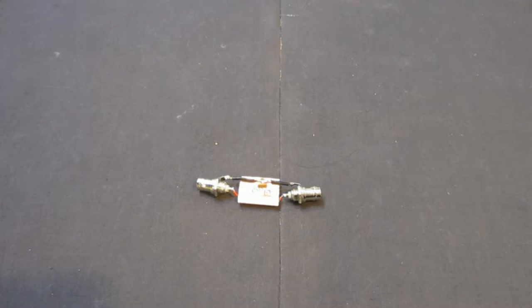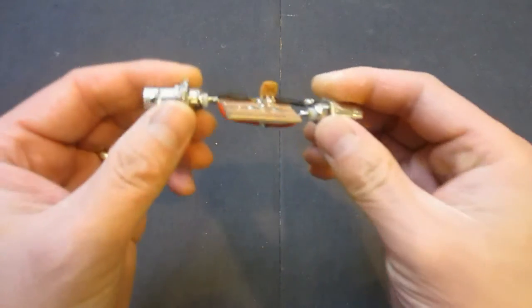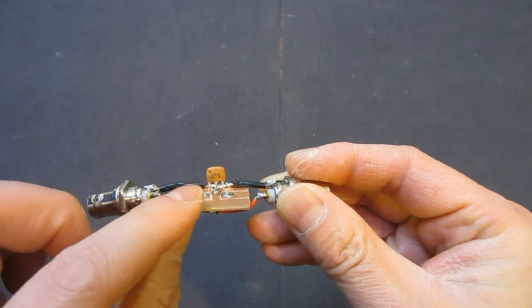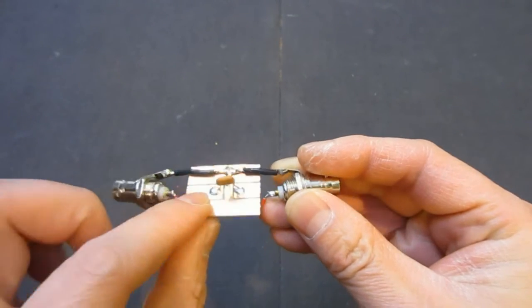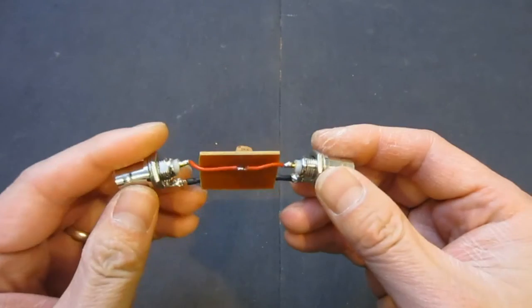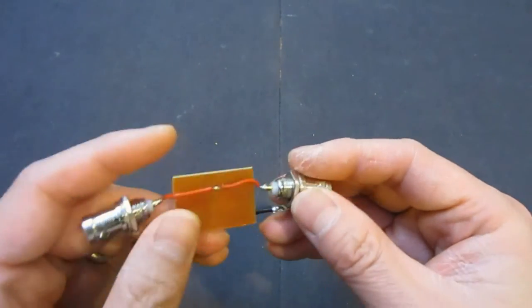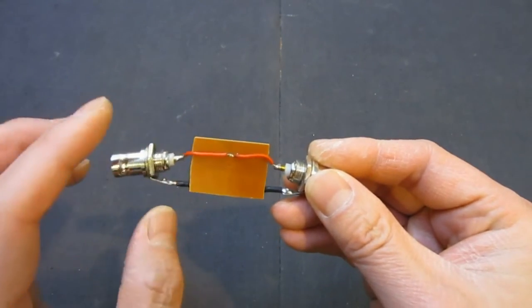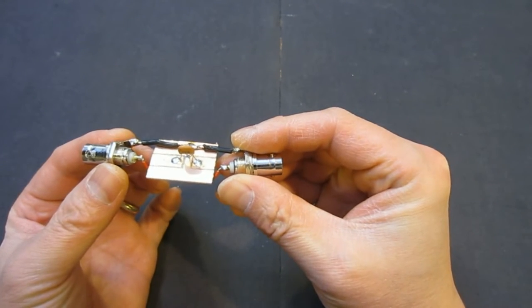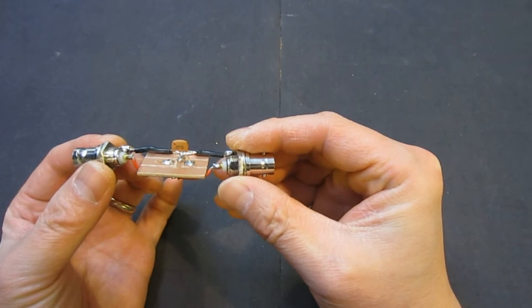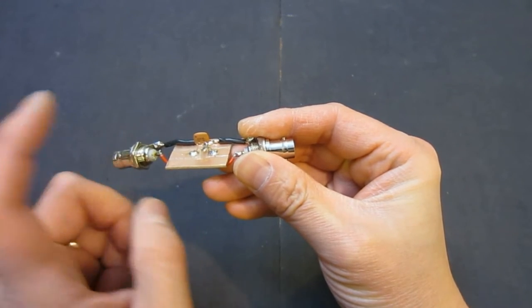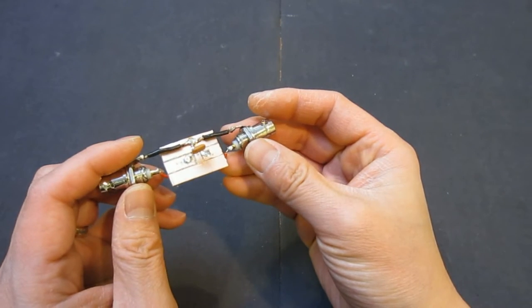So before we continue, I wanted to show you the test jig that I will be using today. Here is just a simple circuit board that has the device under test, and right now is a 10.7 MHz crystal filter. So it's mounted on this small PCB. And then we have two BNC connectors, common ground, and right now it's configured as a through device. So that I can use this to characterize, to test whether or not the signal generator output is flat, remains flat over the frequency range.